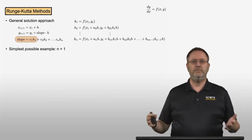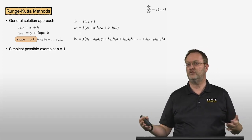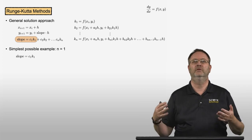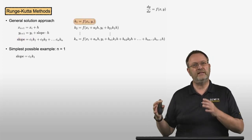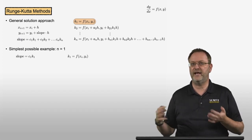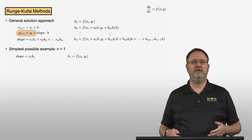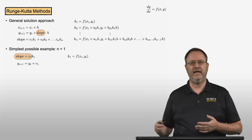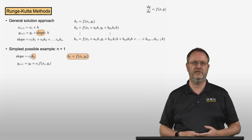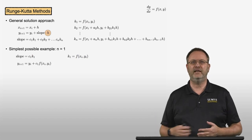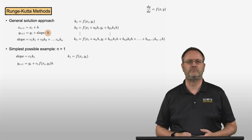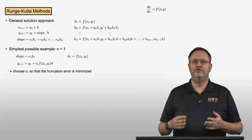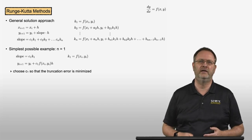The simplest possible RK method uses a single slope, so n equals 1. The slope is c_1 times k_1, and k_1 is the right-hand side of the ODE evaluated at the current known solution x_i, y_i. So y_{i+1} equals y_i plus c_1 times k_1 times h, which substituting k_1 = f(x_i, y_i) gives us the update formula. We have one variable to choose — c_1 — and we choose it to minimize the truncation error.